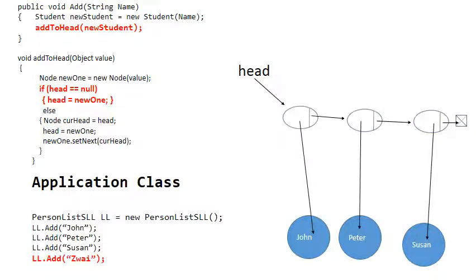In the previous video when we added nodes to the singly linked list, we added them to the tail. Another way of adding nodes is to add them to the head of the singly linked list.